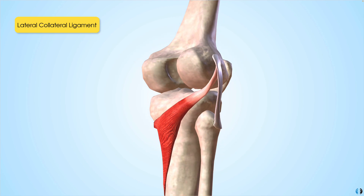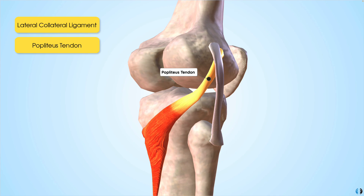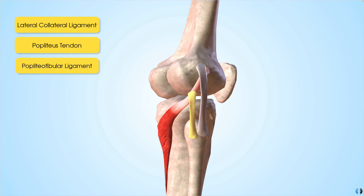Then we have the popliteus tendon, the tendon of the popliteus muscle. This muscle helps in the unlocking mechanism of the knee from a fully extended position and stabilizes the knee against external rotation. Then we have the popliteus fibular ligament. This provides stability against varus forces and external rotation, and as you can see it almost seems to blend into the popliteus tendon as well as having an attachment to the fibular head.